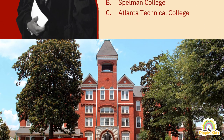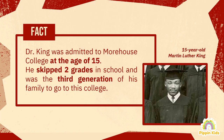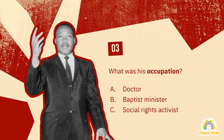The answer is A, Morehouse College. Did you know that Martin Luther King Jr. was admitted to Morehouse College at the age of 15? He skipped two grades in school and was the third generation of his family to go to this college — such a gifted student.